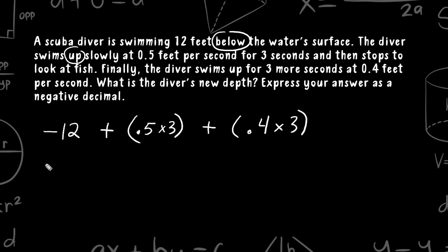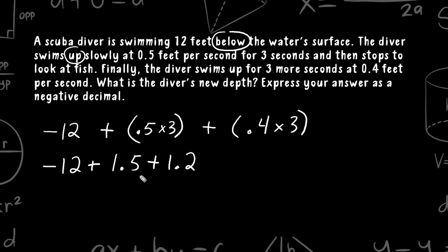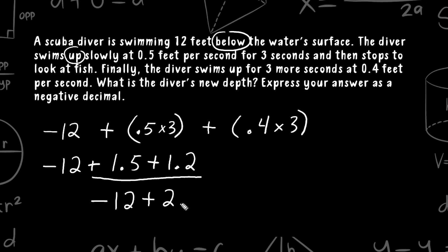What we're going to do now is rewrite this as negative 12 plus the product of the first pair of numbers, which is positive 1.5, plus the product of the second pair, which is 1.2. We can combine positive 1.5 and positive 1.2 because they have the same sign, simplifying the expression to negative 12 plus 2.7.